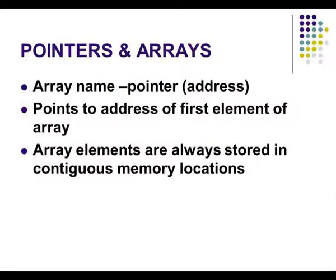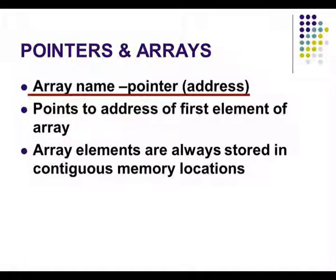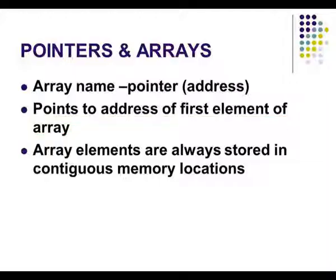How is the pointer understood by the compiler when it is used with arrays? We already know what an array is — a sequence of elements of the same data type stored in continuous memory locations. The array name itself resembles a pointer. When we say character array 1 and define the size of the array, that refers to the first memory location that holds the first element. An array name itself is equivalent to a pointer — the address that points to the first element of the array.